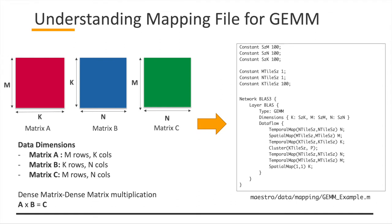Now we are going to introduce a mapping file for GEMM, which refers to general matrix-matrix multiplication, where we multiply matrix A by matrix B to get matrix C. We use conventional M, K, and N dimensions: M×K matrix A, K×N matrix B, and M×N matrix C. It's pretty similar to the conv layer, but note that you have to specify the type as GEMM and specify dimensions as M and K. The dataflow is something you have to create yourself.